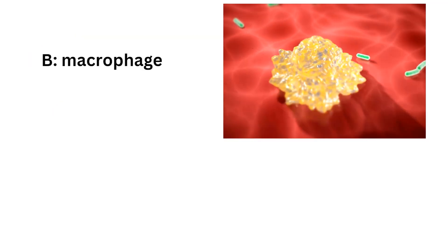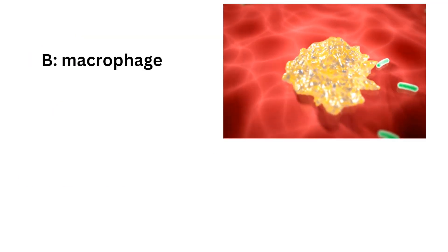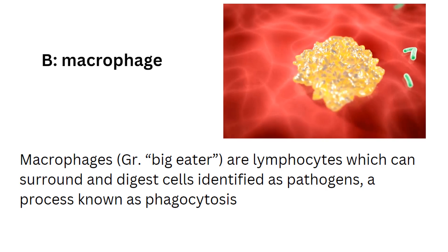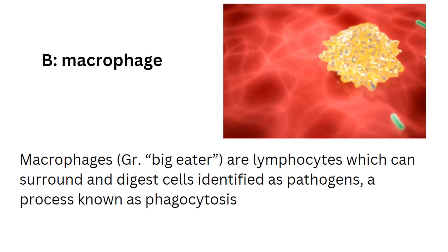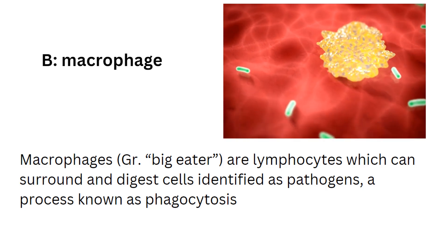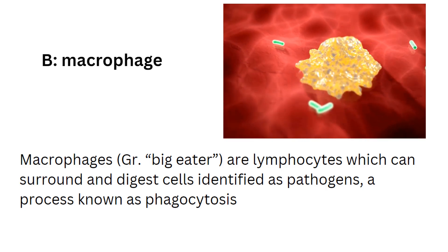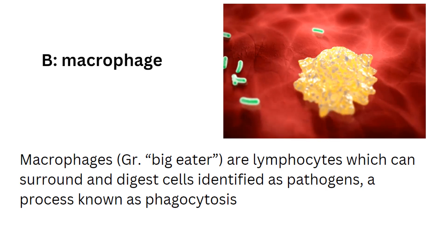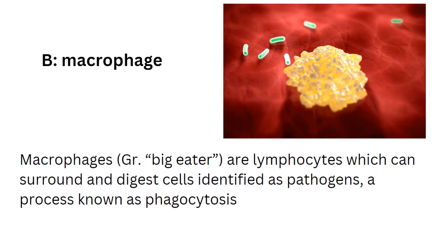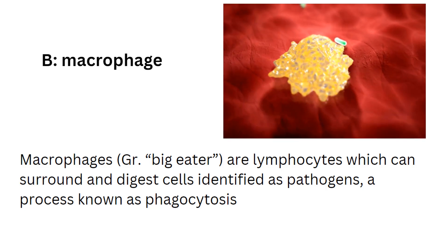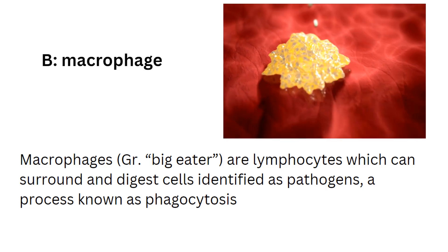And this would be B, macrophage. Macrophages, from the Greek 'big eater,' are lymphocytes which can surround and digest cells identified as pathogens, a process known as phagocytosis.